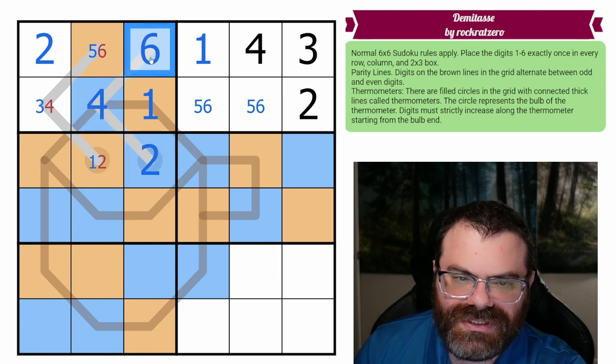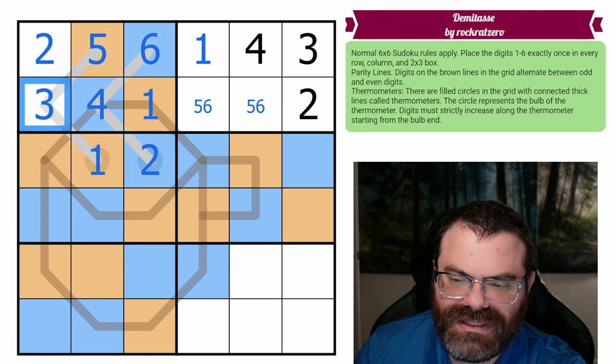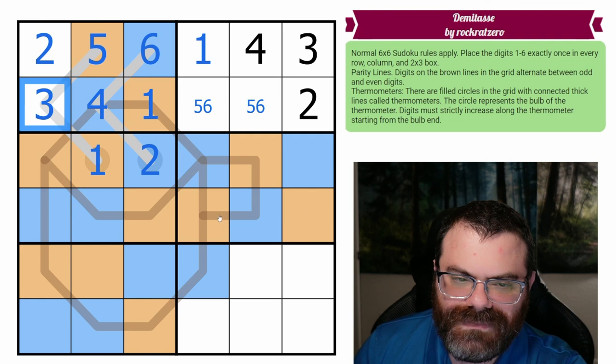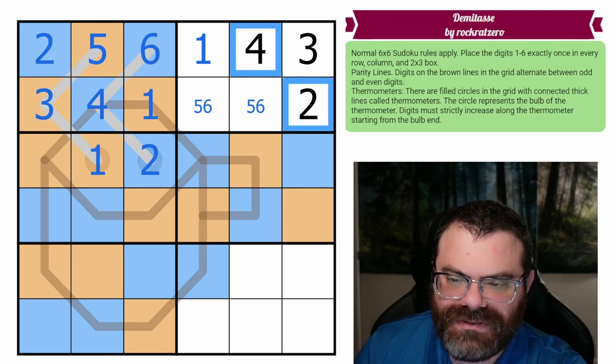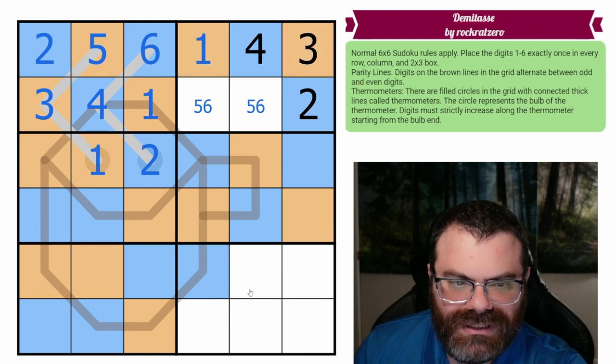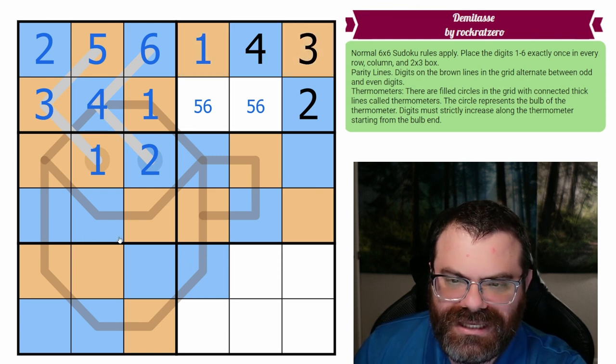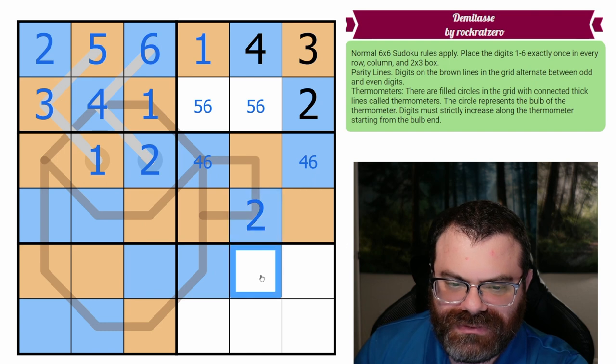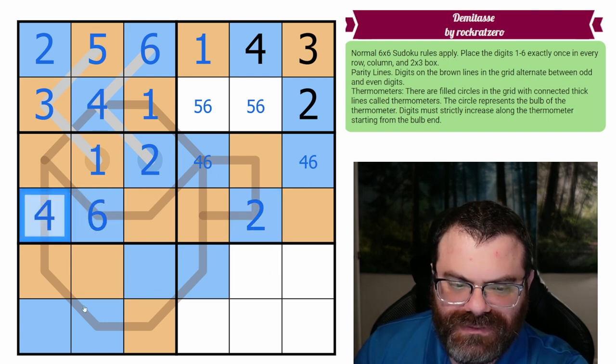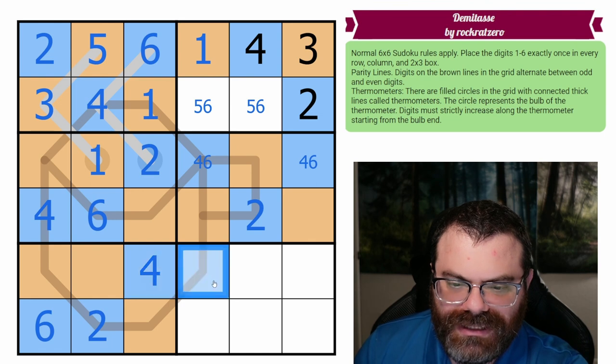So now we know this has to be two, four, six. We know that this has to be one, five, and then this ends up three. I might as well finish our coloring here since we're so close. We know these are even, we know these are odd. So now we basically have two puzzles in one with evens and odds. This is four or six. This is the two. This is six and four. This is six, this is two, this is four.